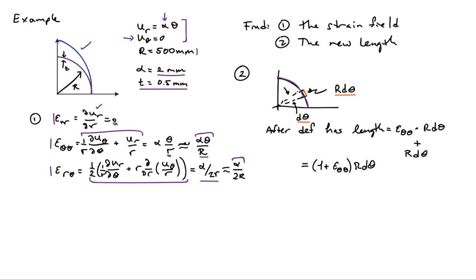So after deformation the length of this little arc of material is going to be the normal strain epsilon_theta_theta times the original length. So that gives us the change in length and then we add to it its original length. And so I can rearrange that expression as 1 plus epsilon_theta_theta times r d theta.